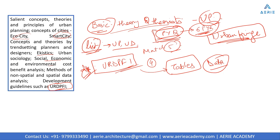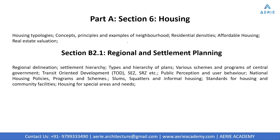Other sections we're covering are also somewhat related to urban planning, so when you study them you can relate the questions. Now the next sections are Section 6 Housing and Section B1.2 Regional and Settlement Planning. For housing, the syllabus includes housing typology, concepts, principles and examples of neighborhood, residential densities, affordable housing, and real estate valuation. In Section B2.1, additional topics include national housing policies, programs and schemes, slums and squatter informal housing, standards for housing and community facilities, and housing for special areas and needs.